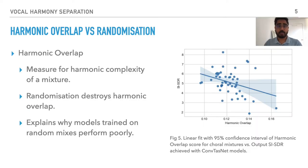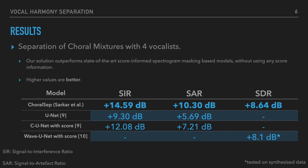We show that our model does in fact perform poorer for examples that have higher harmonic overlap. This also supports our finding where randomizing mixtures during training negatively affected performance, since randomizing mixtures destroys the harmonic overlap between the sources.